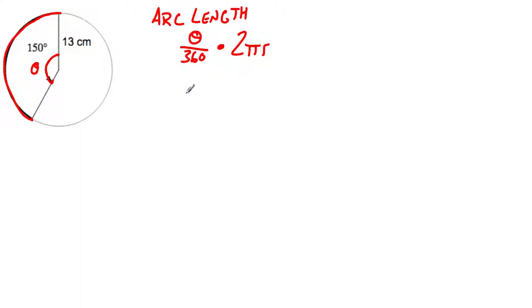So for this problem, we have 150 divided by 360 times 2π times 13. Now, we don't want a decimal. We could easily put this into a calculator and get a nice number. But we don't want that. We want an exact value. When we have an exact value, we basically want a fraction.